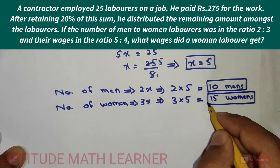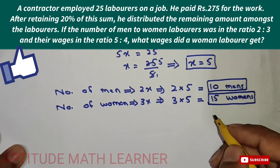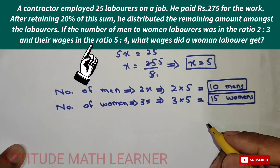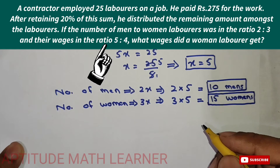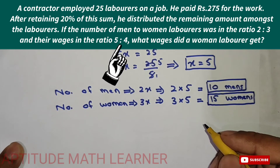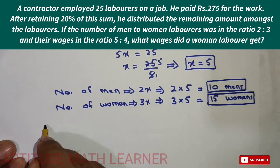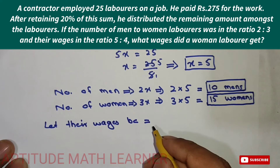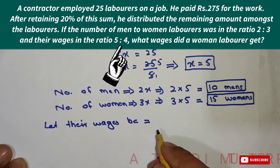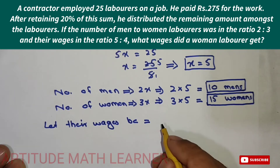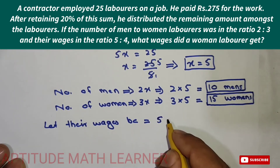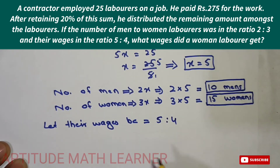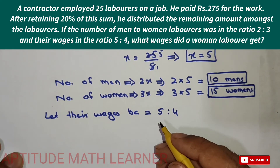Now we handle the wages. The wages are in the ratio 5:4, so let the wage per man be 5x and the wage per woman be 4x.